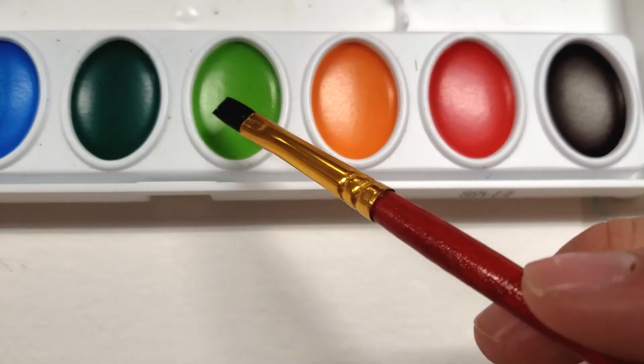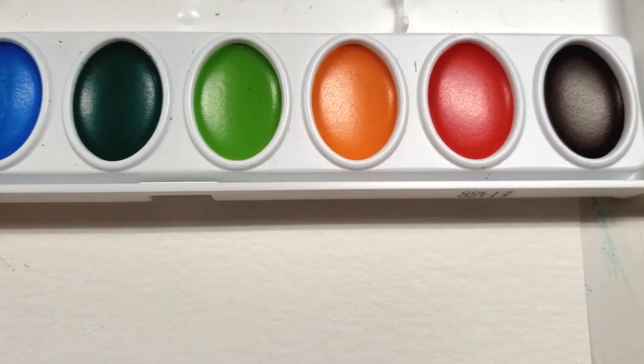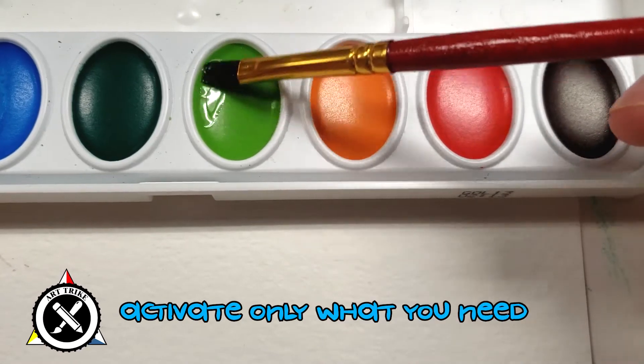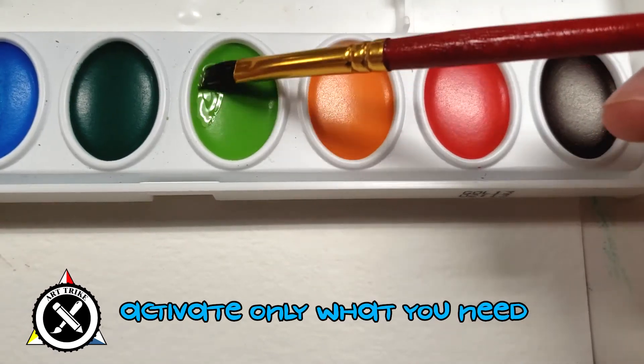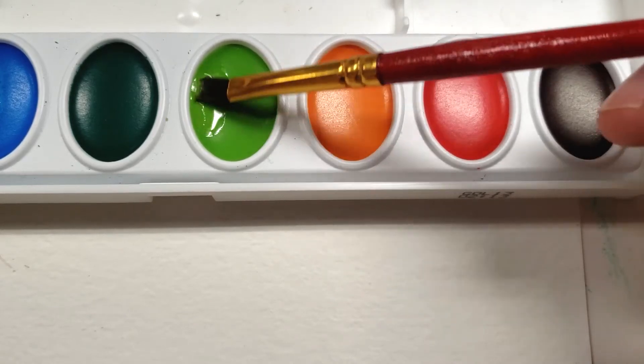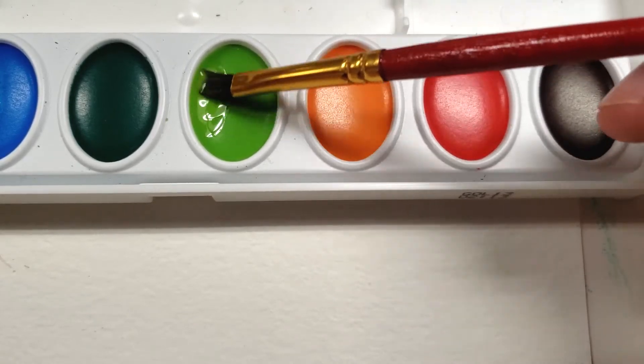When you activate a palette of color, you don't have to add water to the whole thing. You can just add it to a little spot, especially if your paintbrush is smaller. You don't have to activate it all and just make a bigger mess when you do it.